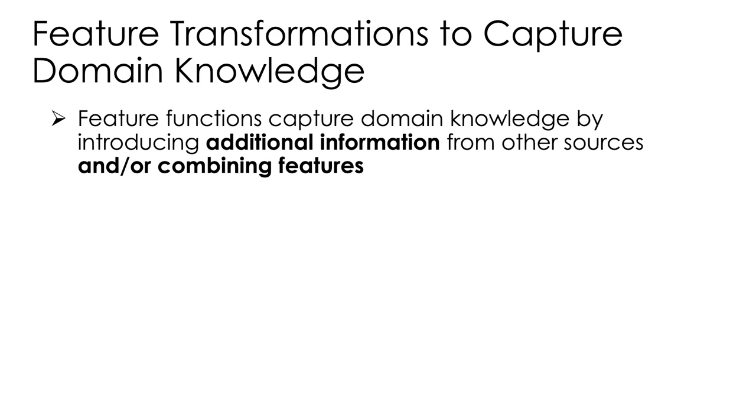Finally, I want to talk about how feature transformations can capture domain knowledge. Feature functions can capture domain knowledge by introducing additional information from other sources or combining features in new ways. For example, I might believe that the purchase of a product could depend on whether or not it's winter at the location of the customer. So I would build a new feature that says 0 or 1, and it's 1 if it's winter, at that time and location. Keep in mind that different customers in the southern or northern hemisphere might experience winter at different times of the year. So this could actually be a database lookup. But this feature could be very useful in deciding whether or not that customer might purchase a pair of gloves.